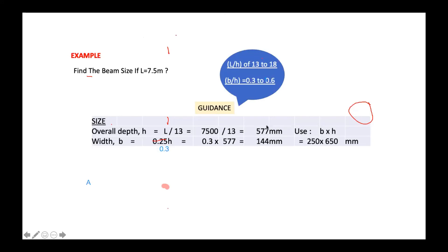You got 144 millimeter times 577. And this is the minimum dimension that you obtained from the control deflection. Therefore, you can choose the size greater than the minimum that you obtained here. For example, I will use 250 times 650. You also can use maybe 200 times 600.